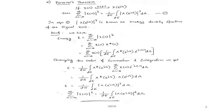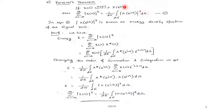Next, we discuss Parseval's theorem. Parseval's theorem is mainly used to obtain the energy density spectrum, especially in the frequency domain, and almost all transform techniques use this — like Fourier transform and even Fourier series. The statement is: if x(n) has DTFT X(e^{j\omega}), then summation over n of |x(n)|² = (1/2π)·integral over 2π of |X(e^{j\omega})|²·dω, where |X(e^{j\omega})|² is the energy density spectrum.